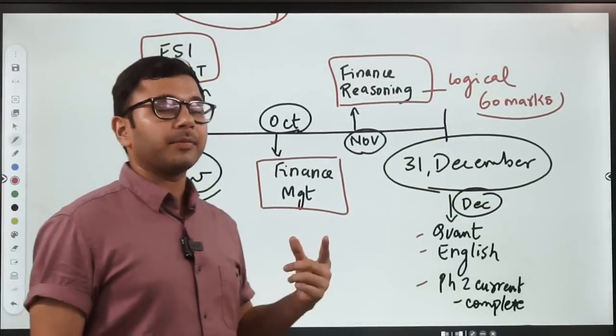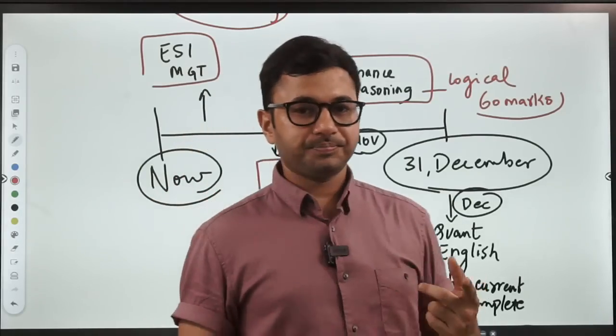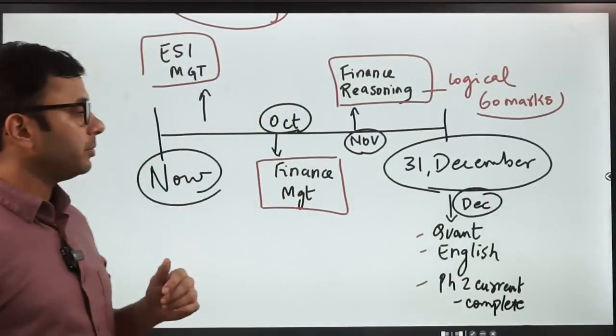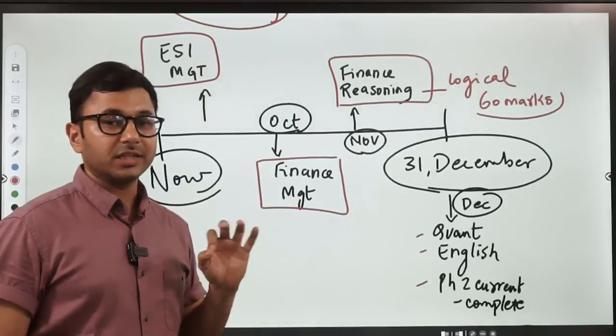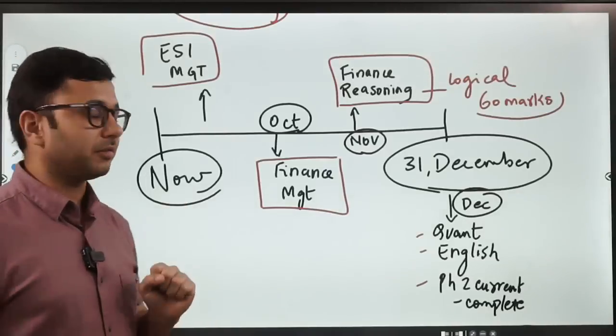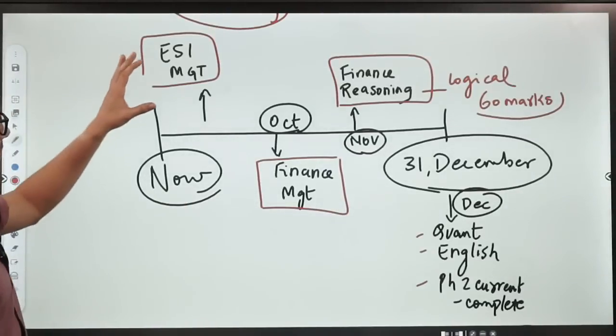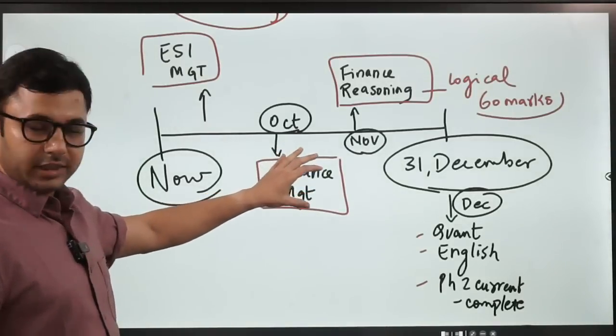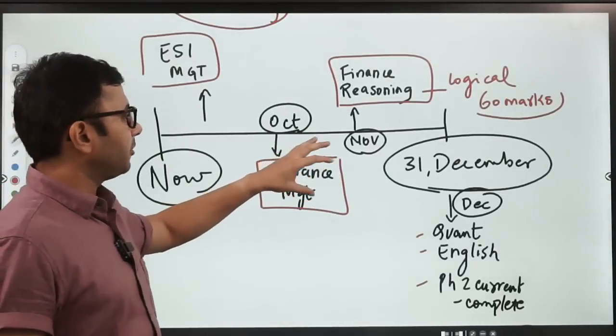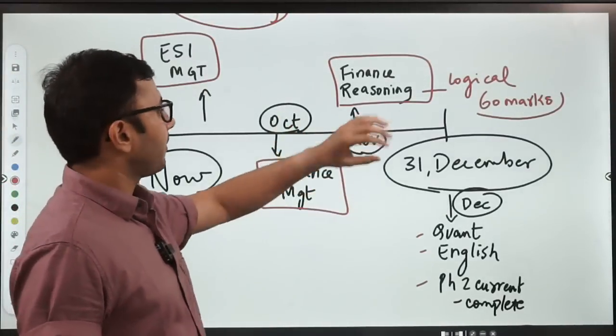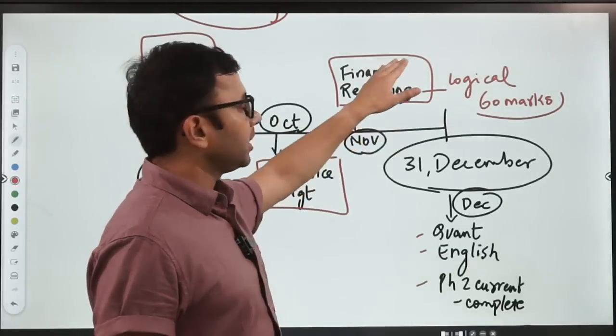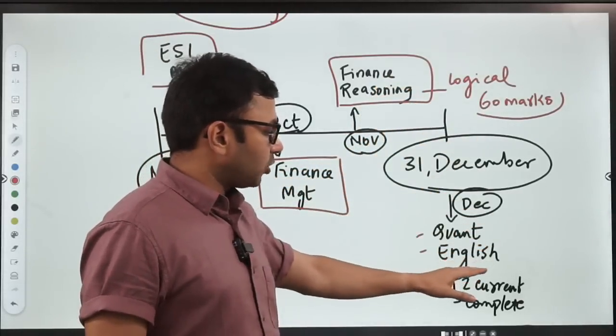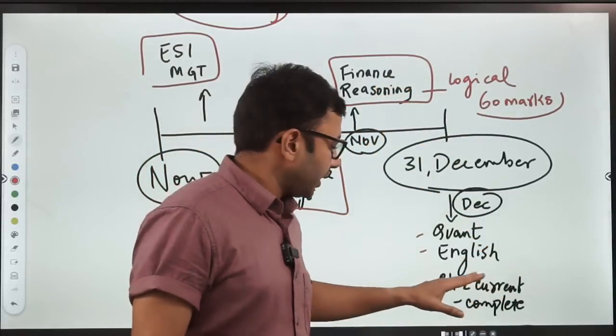Now your time starts for revision. Revision time comes January onwards and you have to make sure that you are revising at least twice if not more. September: ESI management. October: you continue with management, if ESI is not done you continue with ESI as well, you pick up finance as soon as ESI is done. Two months, management will easily be done. In November you start reasoning, continue with finance. In December you start quant and English and phase two current.